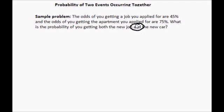Well the 'and' is the give away there. We need to multiply. I am going to change these to decimals. 45 percent is 0.45 and I am going to multiply that by 0.75. When I do that on a calculator I get 0.3375. This is a decimal. As a percentage that would be 33.75 percent.